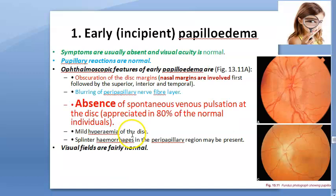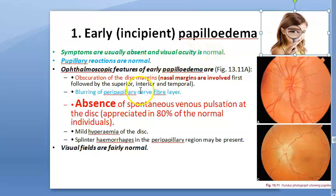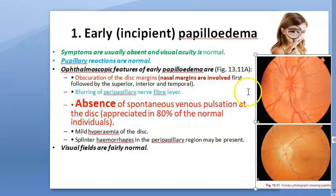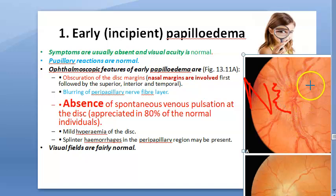The four stages of papilledema are: early (incipient), fully developed, chronic, and atrophic. In early incipient papilledema, visual acuity is normal, patients have no ophthalmic symptoms, and pupillary reactions are normal. On fundoscopic examination, you will see obscuration of the disc margin - nasal margins are more involved - and blurring of the peripapillary nerve fiber layer.